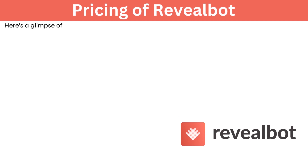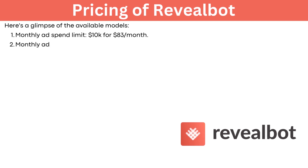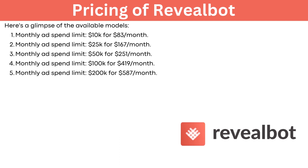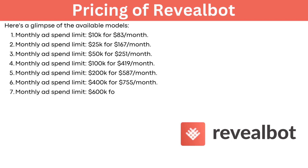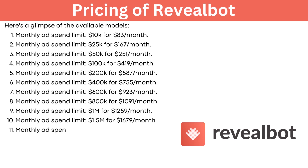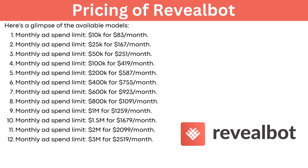Here's a glimpse of the available pricing tiers: monthly ad spend limit of $10K for $83/month; $25K for $167/month; $50K for $251/month; $100K for $419/month; $200K for $587/month; $400K for $755/month; $600K for $923/month; $800K for $1,091/month; $1 million for $1,259/month; $1.5 million for $1,679/month; $2 million for $2,099/month; and $3 million for $2,519/month.